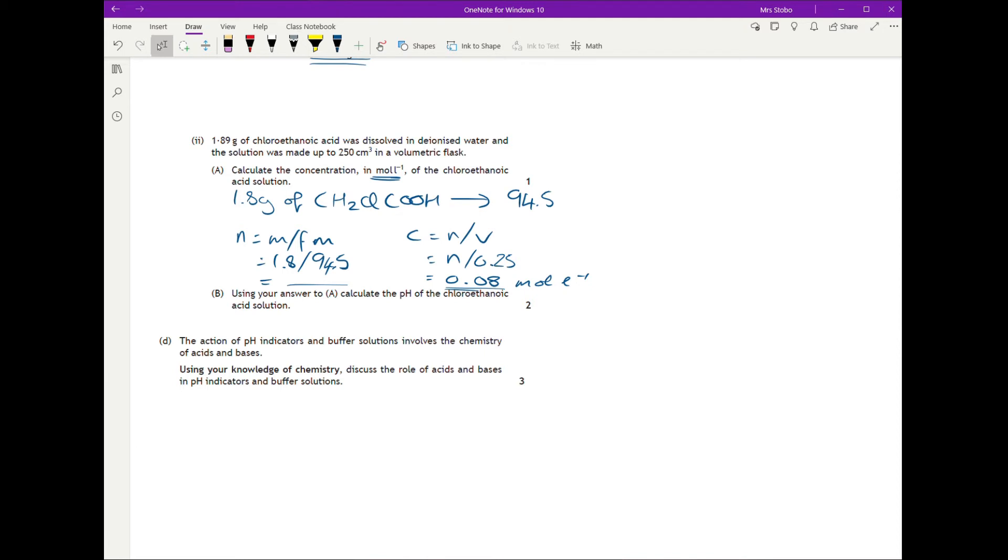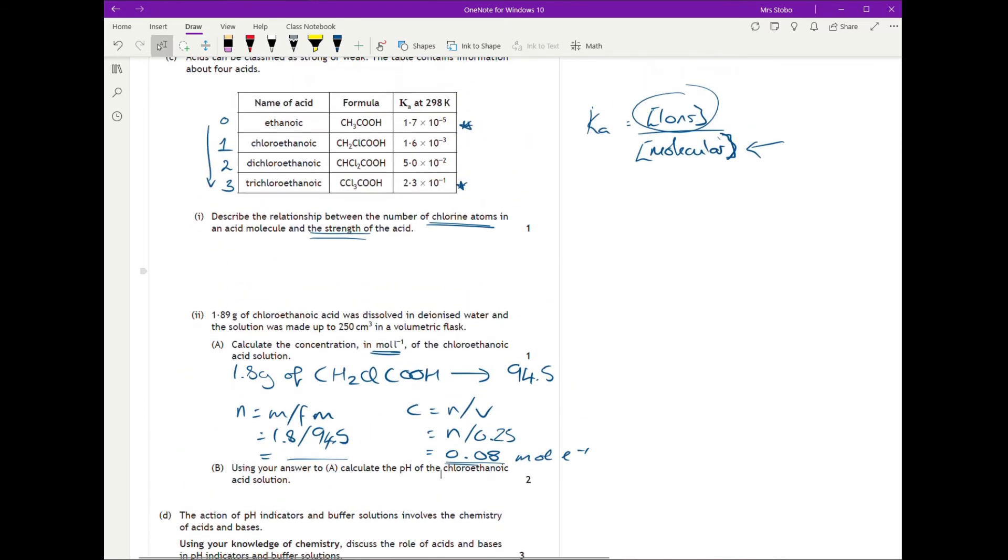Because they've told you moles per liter to the minus one here, you don't actually have to write it down the bottom. But you can if you wish. You can if you put it in, you're going to get it right. Right, so then using your answer, calculate the pH. Right, so that's the bit that becomes a little bit more tricky. I think I've got enough space over here. Right, so worth two marks. Obviously, when I've clipped these, I've not left the same spaces.